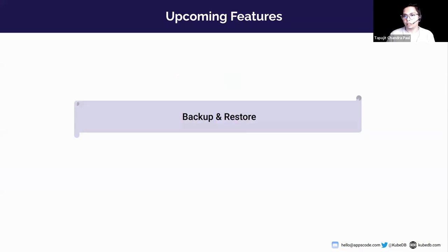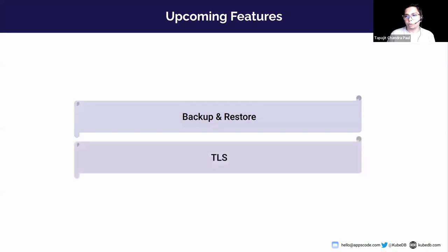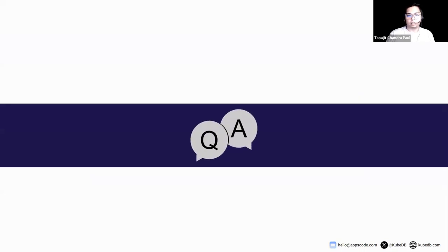You can use the Druid storage autoscaler the same way as the compute autoscaler — just apply it and it will scale as needed when PVC consumption hits the threshold. As for upcoming features: Druid backup and restore is releasing very soon, allowing easy backup and restore of Druid clusters using KubeDB. We're also adding TLS support, where you can simply enable TLS in the YAML and the Druid cluster will be secured. That's all from my side — if you have any questions please ask now.